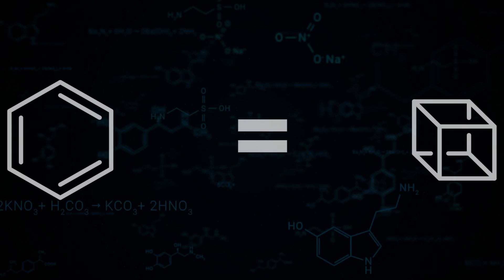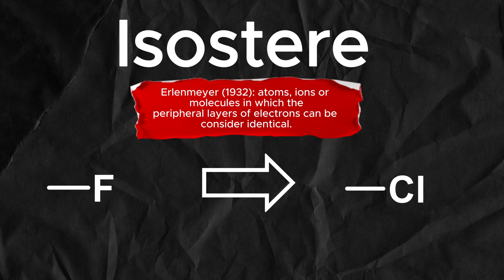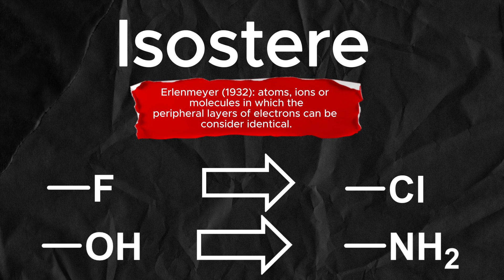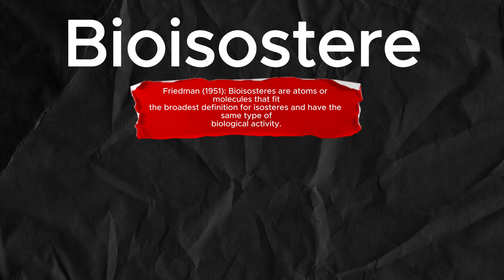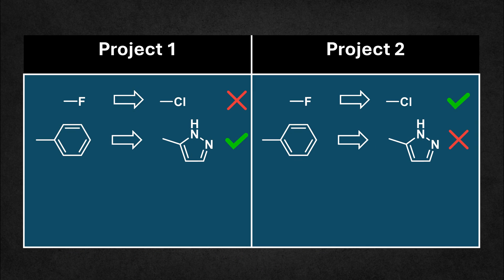Eaton was describing that cubane could act as a bioisostere of benzene. An isostere is an atom or molecule with an identical peripheral electron distribution to another — for example, a fluorine and a chlorine group, or an alcohol and an amine. Bioisosteres are atoms or molecules which fit the loosest definition of an isostere, providing they retain biological activity. This means functional groups can be bioisosteres without being an isostere of the group they are replacing. However, this does mean that isosteres and bioisosteres can be target-specific and not always generally applied.